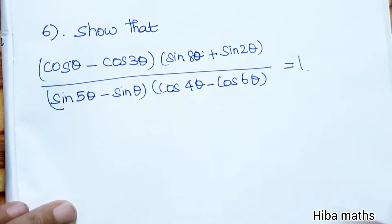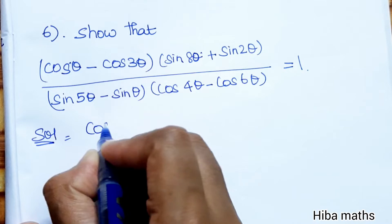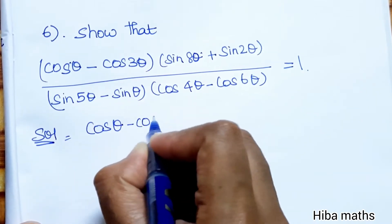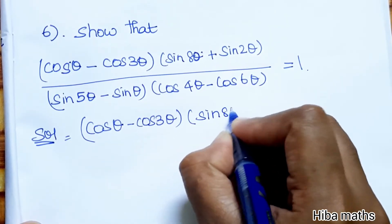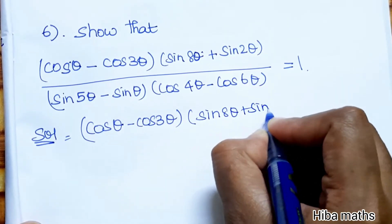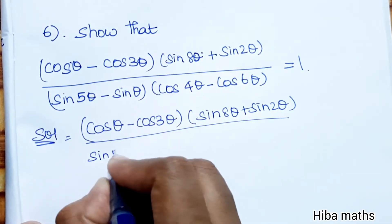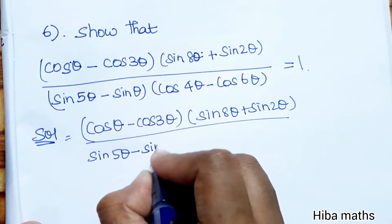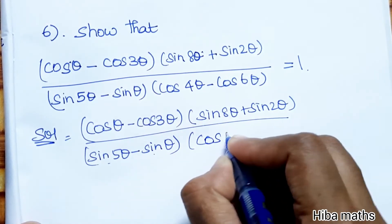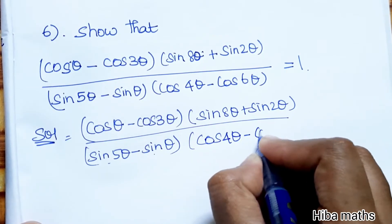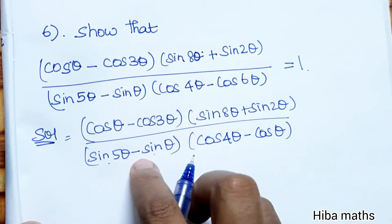We will prove by solving the LHS part first. cos theta minus cos 3 theta uses the formula cos C minus cos D. Then sin 8 theta plus sin 2 theta uses sin C plus sin D, divided by sin 5 theta minus sin theta which is sin C minus sin D, and cos 4 theta minus cos 6 theta uses cos C minus cos D. These are the formulas we will apply.